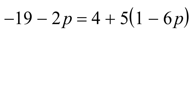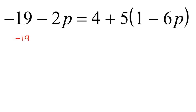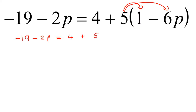The first thing we notice with this example is that there is a bracket, so we want to get rid of that. We just leave everything else as it is for now. We'll take this 5 and multiply it into the bracket, and so that's going to become 4 plus 5, then minus 30p.